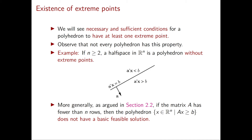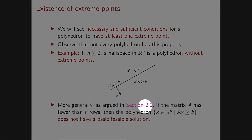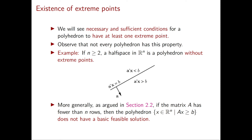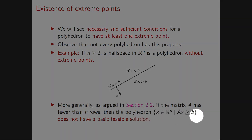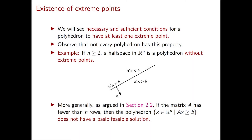A simple way to see that the half-space doesn't have any extreme points is to use the definition of a basic feasible solution. Since our polyhedron is defined by only one inequality constraint, there is clearly no basic solution at all, because that requires the existence of two linearly independent inequality constraints. More generally, if we have any polyhedron in Rn defined by Ax ≥ b where A has fewer than n rows, this polyhedron cannot have any basic feasible solution, since the definition requires n linearly independent rows.